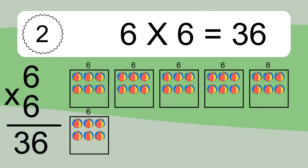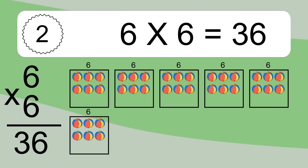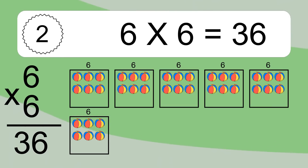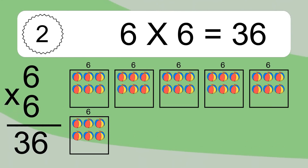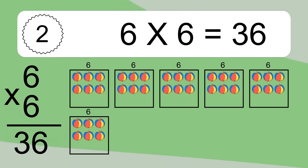We have 6 boxes and each box has 6 colorful balls inside. If you count all the balls in all the boxes together, you will have 6 times 6 balls. This equals 36 balls.